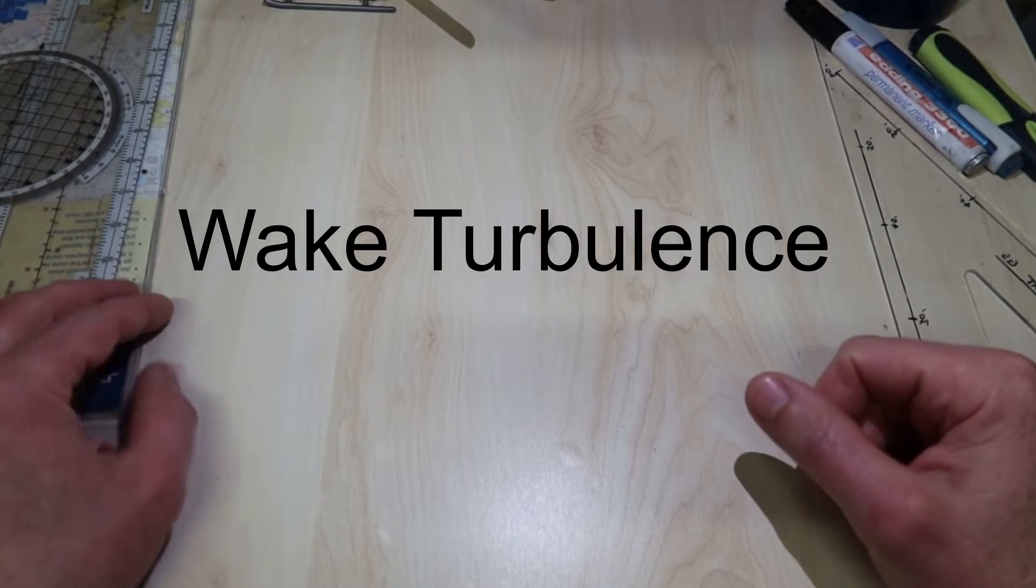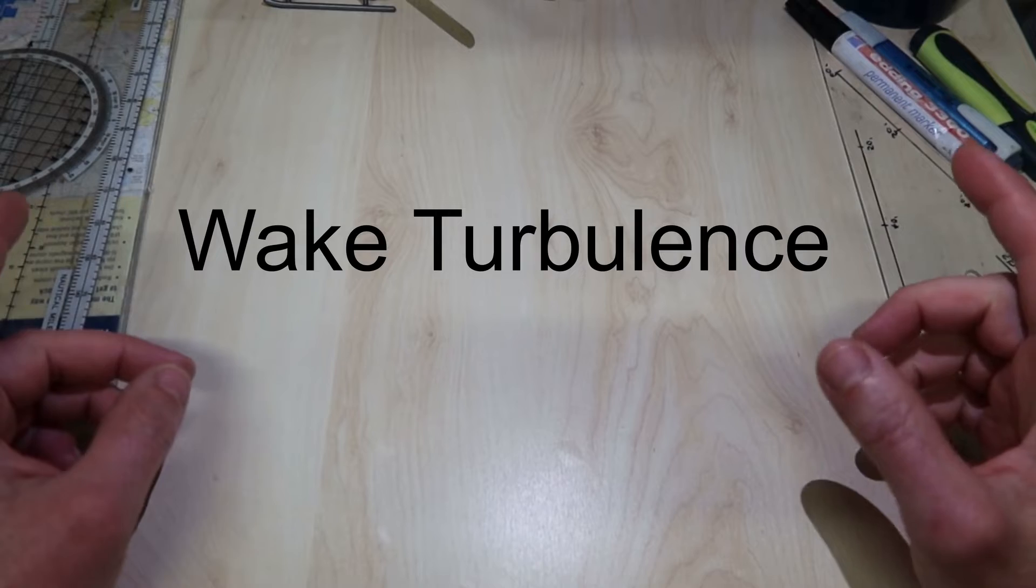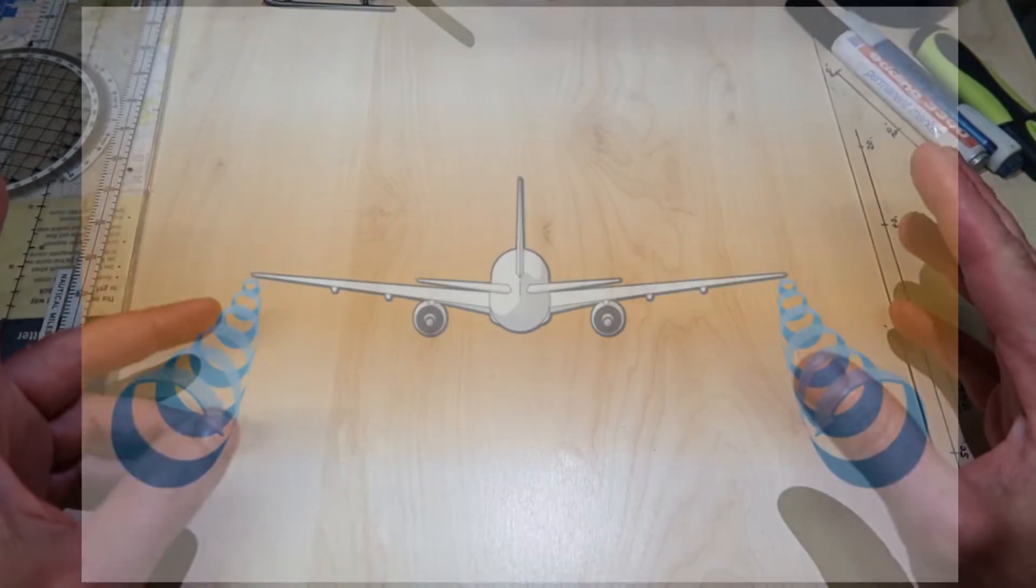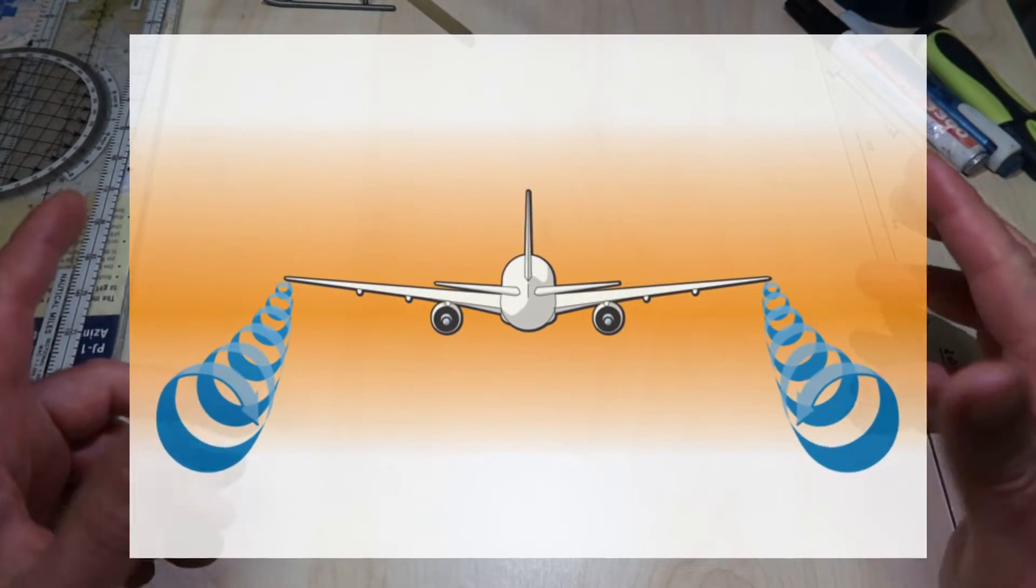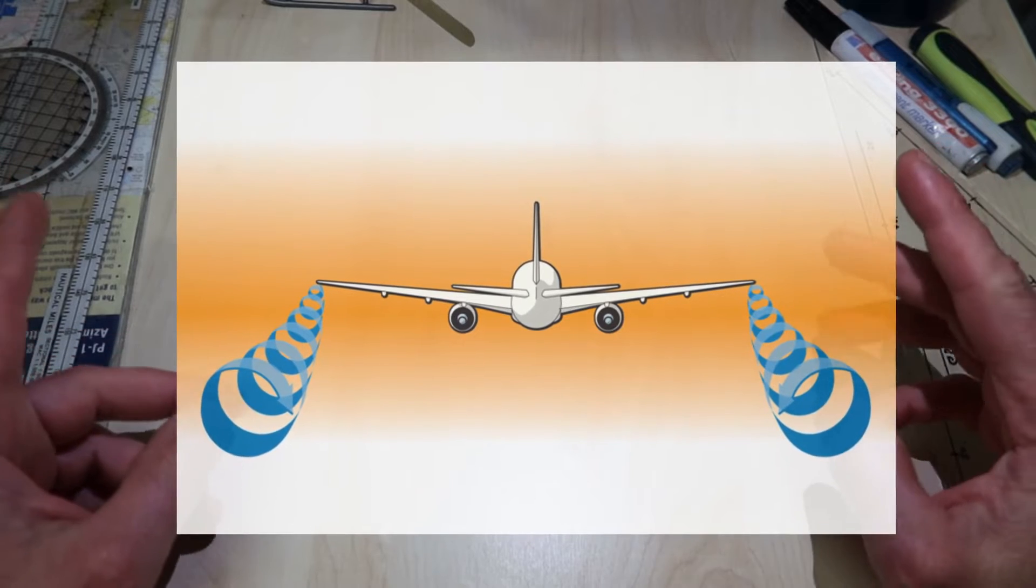Wake Turbulence is caused by the tip vortices left by an aircraft or helicopter when it is generating lift.